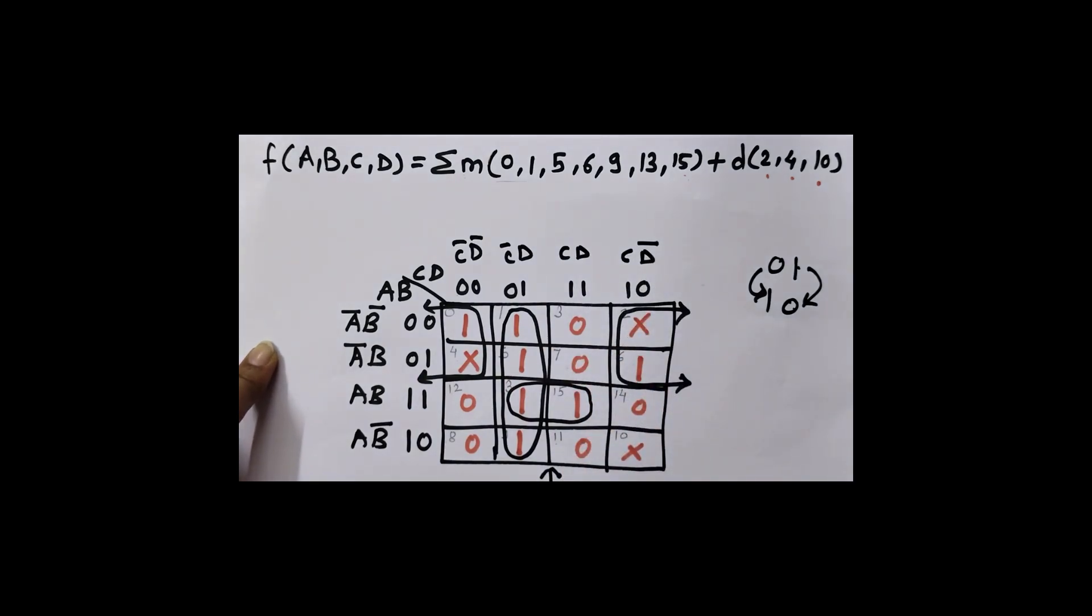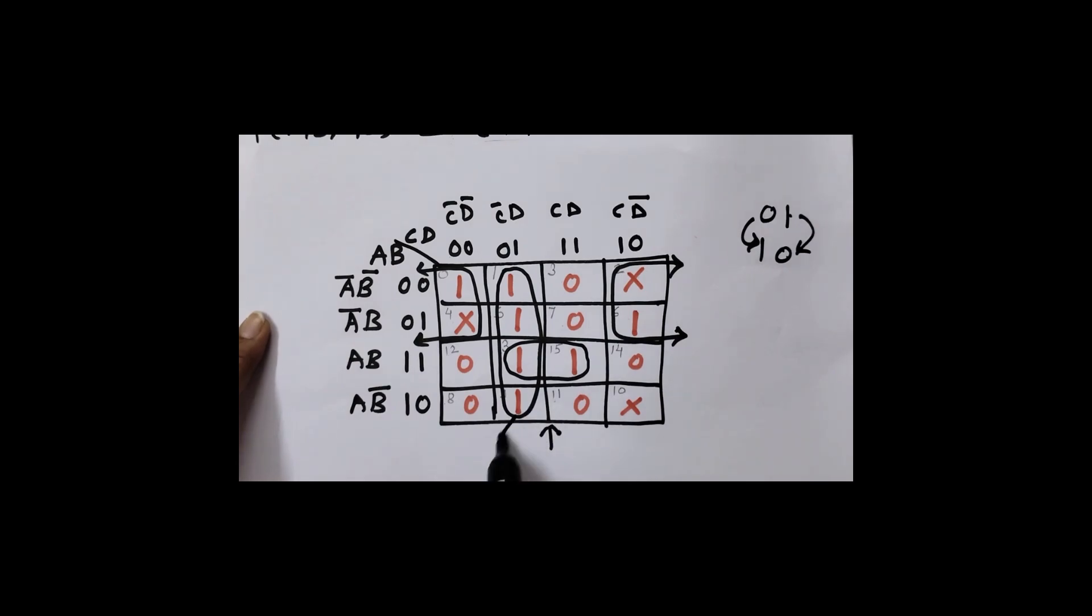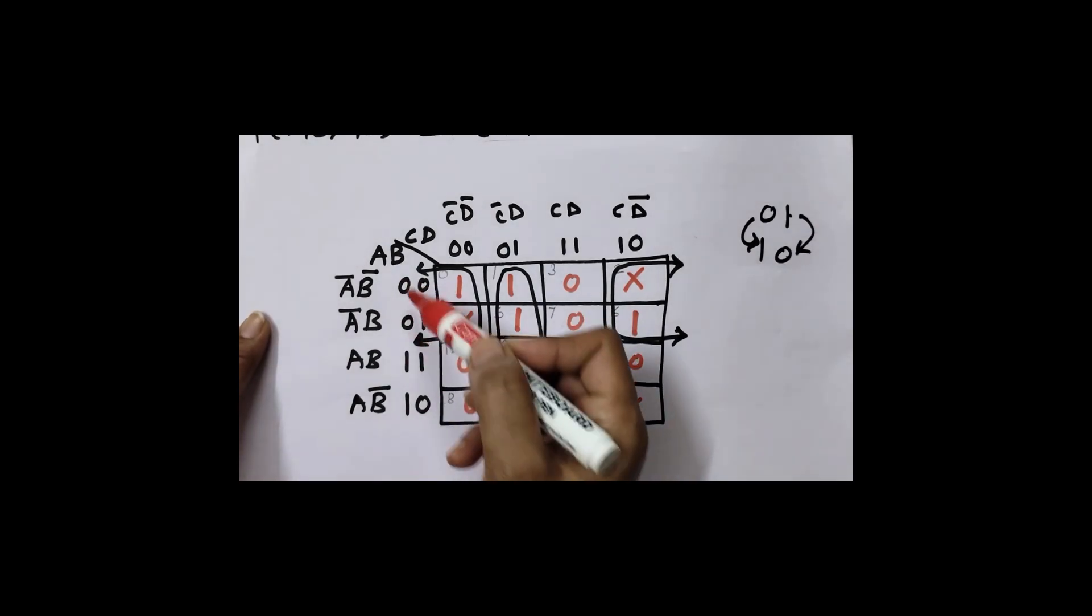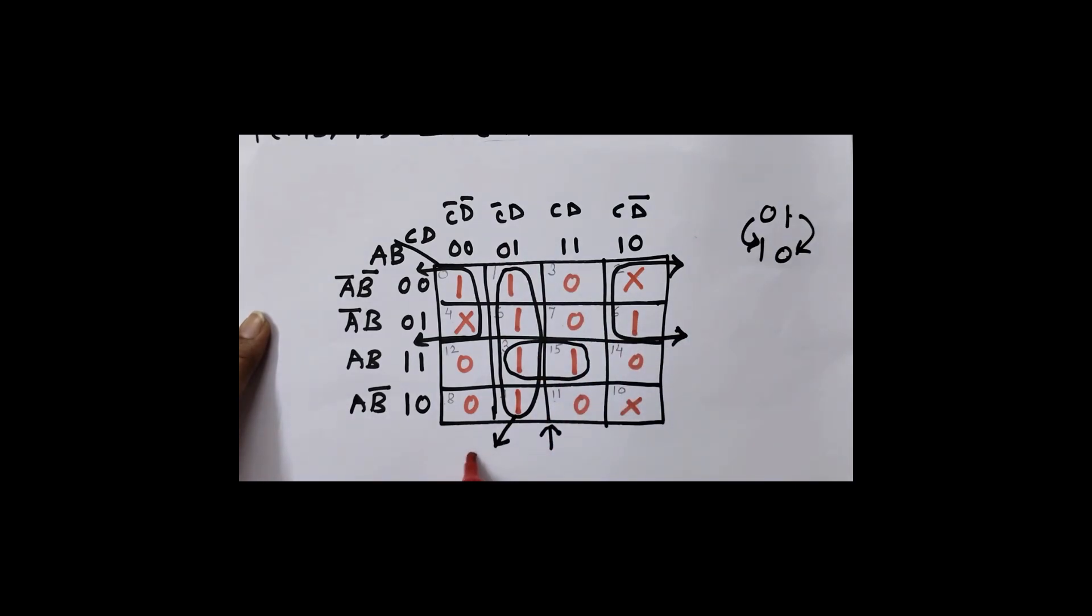I will write my first equation for this vertical quad. So equation can be written as, here C, here nothing is common. So what I will write? C is 0, D is 1. So C bar, D. So this is C bar D.